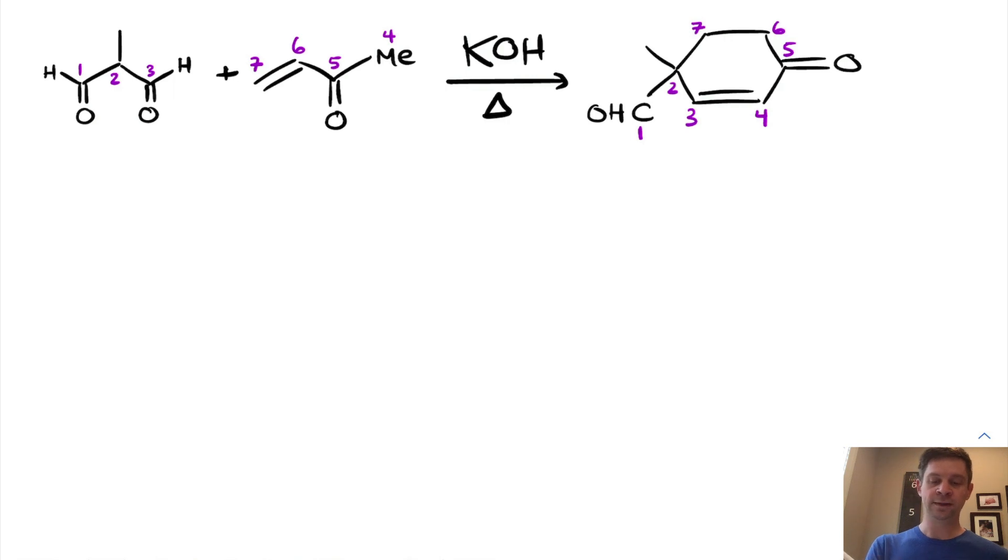So we can see, for example, the original Michael donor built into carbons one, two, and three, and the original Michael acceptor built into carbons four through seven in this product. And this methyl group is pretty much just along for the ride with carbon two throughout the mechanism.